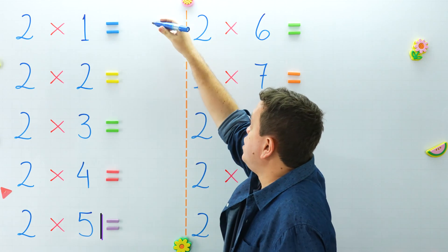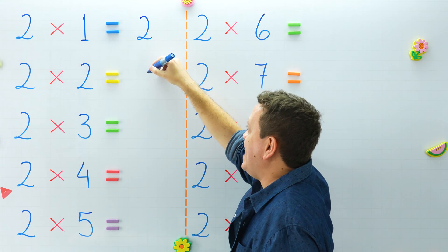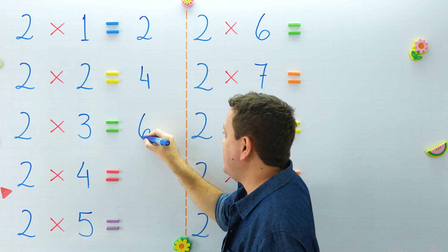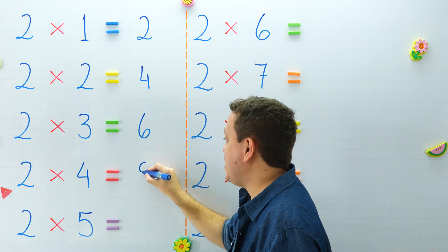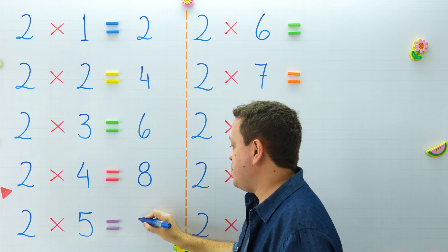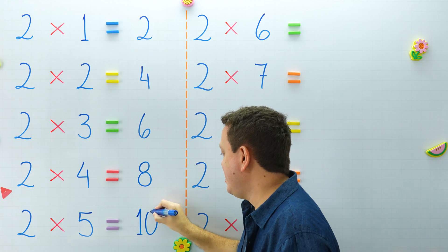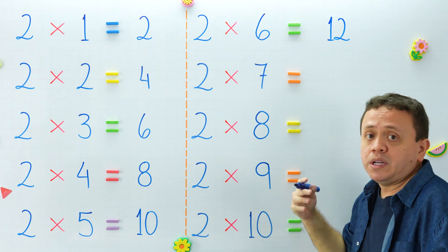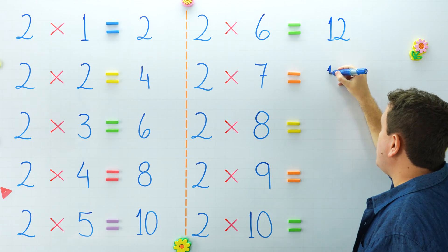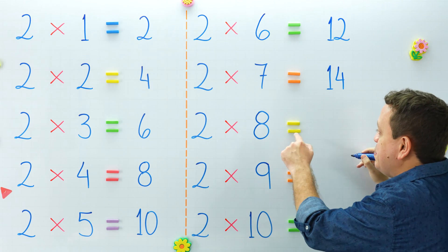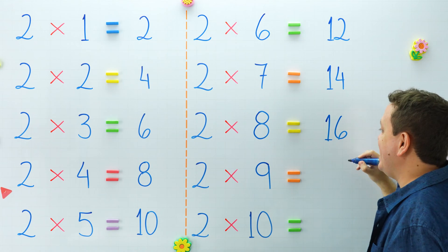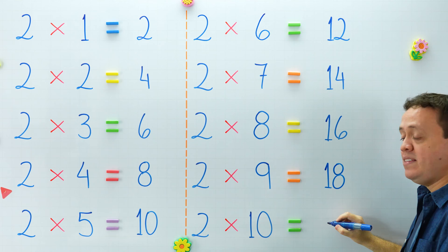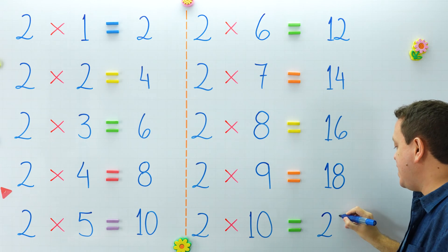Now the 2 times table. Pay attention. 2 times 1 equals 2, and 2 times 2 equals 4. 2 times 3 equals 6. The next one, 2 times 4 equals 8. Over here, 2 times 5 equals 10. 2 times 6 equals 12. What is 2 times 7? Well, 2 times 7 equals 14. That's right. 2 times 8 equals 16. 2 times 9 equals 18. The last one, 2 times 10 equals 20.